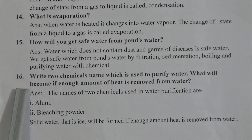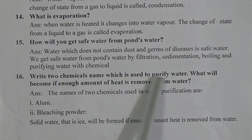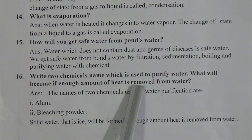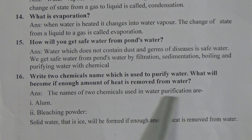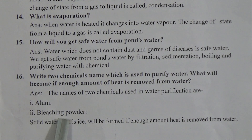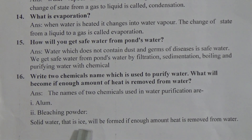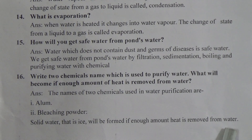Short question number 16: Write the names of two chemicals used to purify water. The names of two chemicals used in water purification are alum and bleaching powder. Also, if enough amount of heat is removed from water, solid water — that is, ice — will be formed.